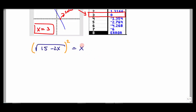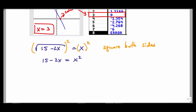Squaring both sides — if this were a fourth root we'd take both sides to the fourth power; a cube root, to the third power. When I square the square root, I just get the radicand back: 15 minus 2x equals x squared. The extraneous root comes into play right here when we square both sides, because squaring a positive or negative number both give a positive value back — so one of those numbers has potential to not actually solve the equation.